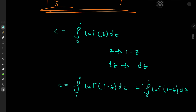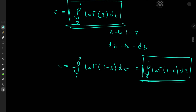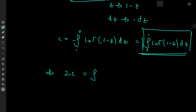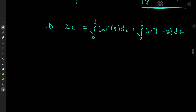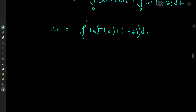We now have two different forms of the same integral, so we add them: 2C = integral from 0 to 1 of log gamma(z) dz plus integral from 0 to 1 of log gamma(1−z) dz. Using linearity of integration, this becomes the integral from 0 to 1 of log gamma(z) plus log gamma(1−z) dz, which by log properties equals the integral from 0 to 1 of log[gamma(z)·gamma(1−z)] dz.